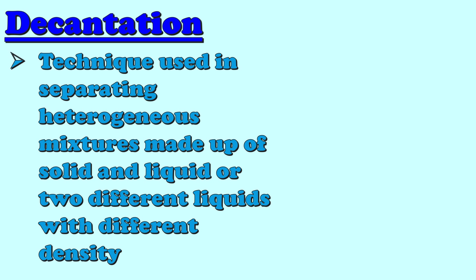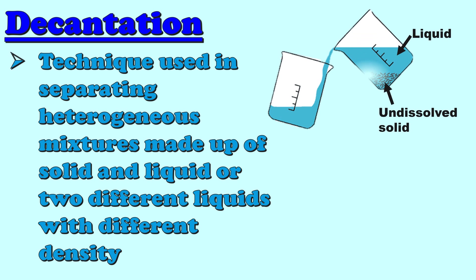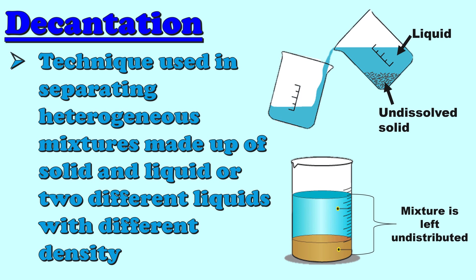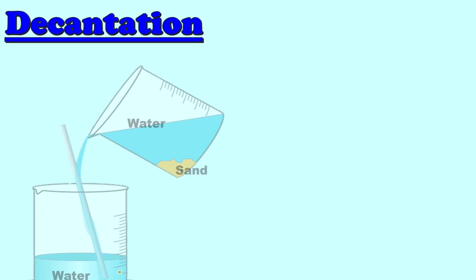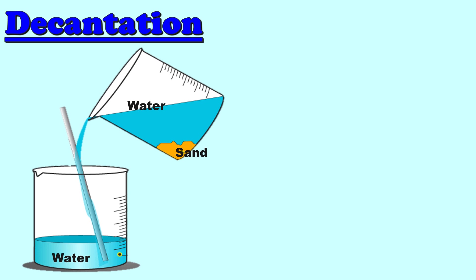Let us first discuss what decantation is. Decantation is a technique used in separating heterogeneous mixtures made up of solid and liquid, or two liquids with different density. In the process of decantation, the mixture is left undisturbed. Here is an example of a mixture that can be separated through decantation: a mixture of sand and water. Once the sand settles at the bottom of the container, you can easily separate water by pouring it into another container.